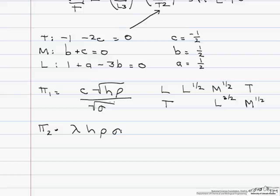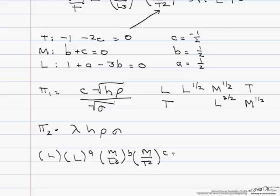So lambda is L. We have h to the a, rho to the b, sigma to the c. And this has to equal M to the zero, L to the zero, T to the zero.